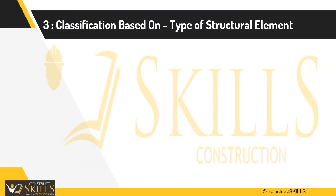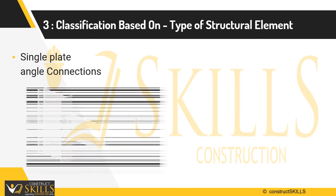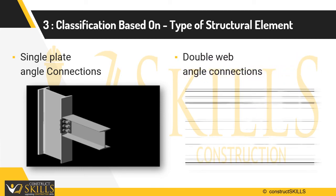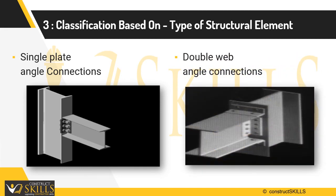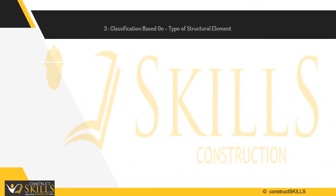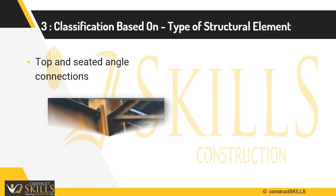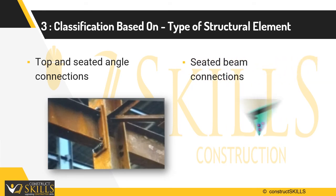Classification based on the type of structural element: there are many different types of structural elements, and their various placements result in many different connection types. The most common structural elements used are angles and plates. Angles placed at an I-beam's web are called web angles, and those placed at an I-beam's flange are called seat angles. Connections can be called top and seated angle connections or seated beam connections.